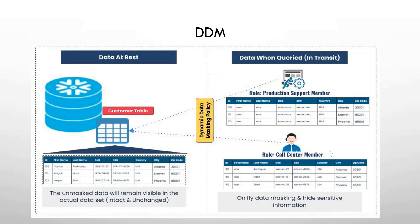Looking at this image from the internet: on the left-hand side is a customer table showing unmasked data which an admin can see — first name, last name, date of birth, SSN, country, city, and zip code. SSN, or similarly a PAN card, is PII data. We don't want anyone to have access to the SSN number. So we'll mask it — users should see only the last two or four digits, or the first name can be completely masked. You can do either a partial mask or a complete mask.